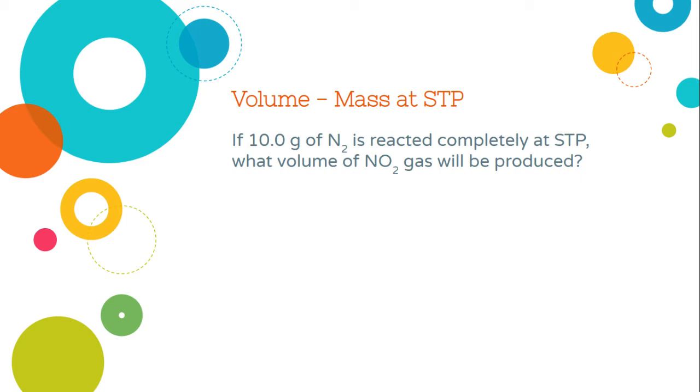Short for zero degrees Celsius and one atmosphere. So our example problem says, if 10 grams of nitrogen is reacted completely at STP, what volume of nitrogen dioxide gas will be produced?